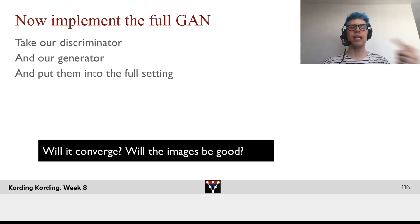Now it's your time to implement the full GAN. Take our discriminator and our generator and put them into this joint setting where they learn at the same time. And then, will it be good? And will the images be any good?